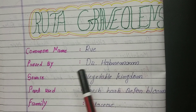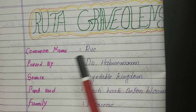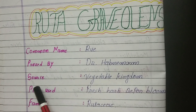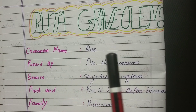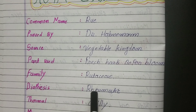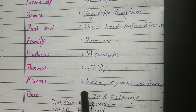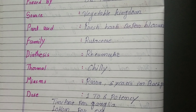In this video we are going to study the full drug picture of Ruta medicine. First, we will see its common name, which is Rue. It was proved by Dr. Hahnemann. Source is from the vegetable kingdom. Part used is fresh herb before blooming — meaning before the plant blooms, we take the herbs and make the mother tincture through potentization. Family is Rutaceae. Diathesis is rheumatic — remember that its diathesis is rheumatic. Thermal relation: the patient will be chilly. Miasm in background: Psora and Sycosis.